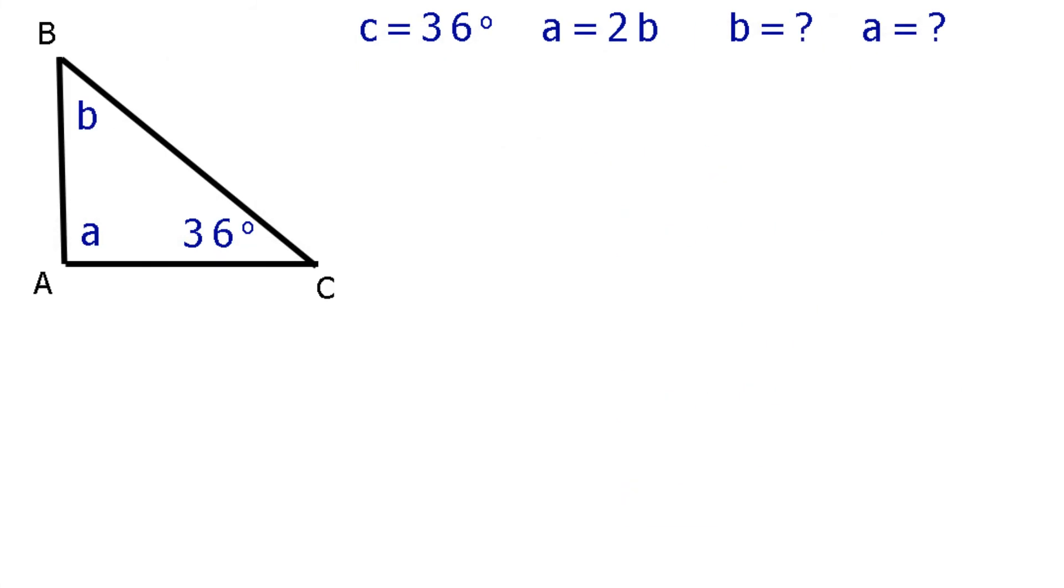So we have a known angle at C equal to 36 degrees. And the size of the angle at A is twice the angle at B. So if we call value of the angle at B, small b, small case, then the angle at A must be 2b, small case. Right? Twice the size. From first principles, the sum of the values of the three angles equals 180 degrees. We can write out the solution like so. 2b plus b plus 36 equals 180.